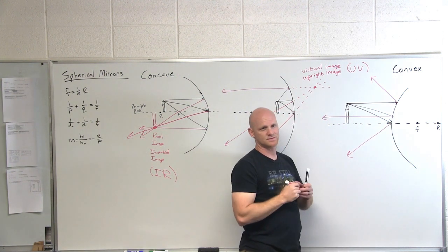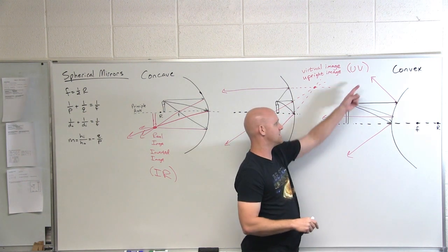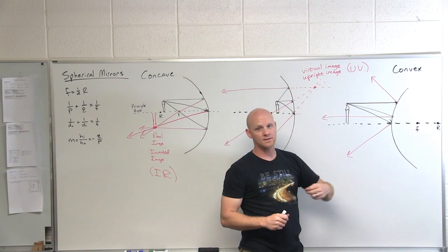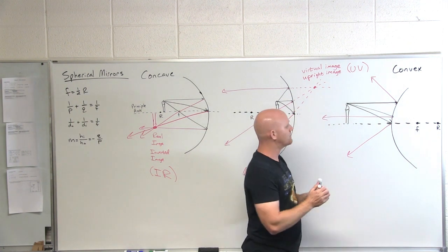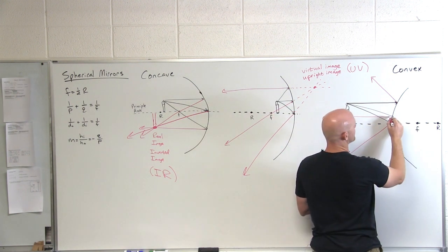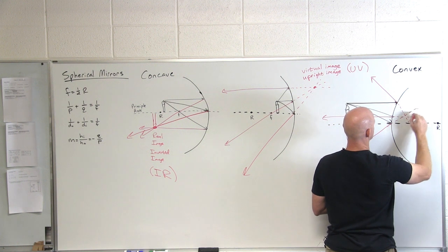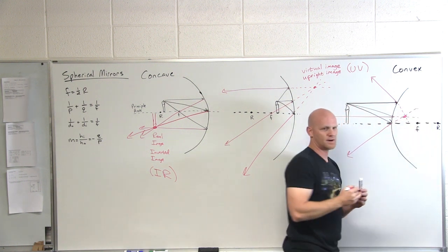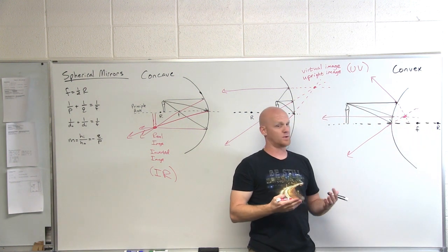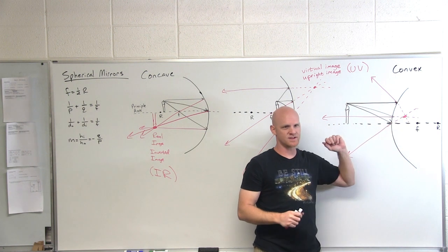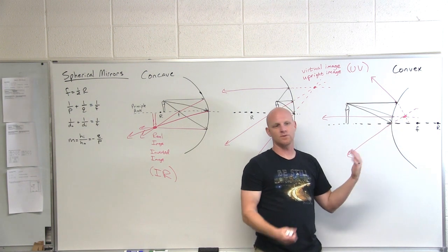And so what do you notice? Yeah, these light rays never really converge. So there's no real image. But they appear as if they might have come from a common point back here. Right there. And so did the light rays really intersect back there behind the mirror? No. And so it's a virtual image.